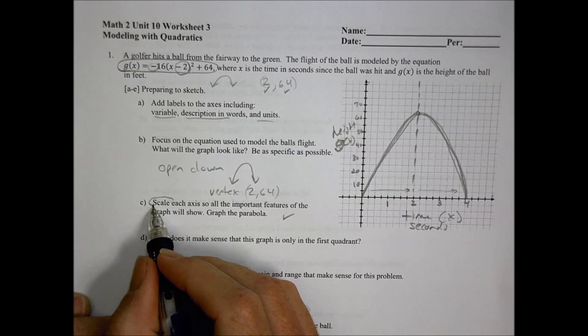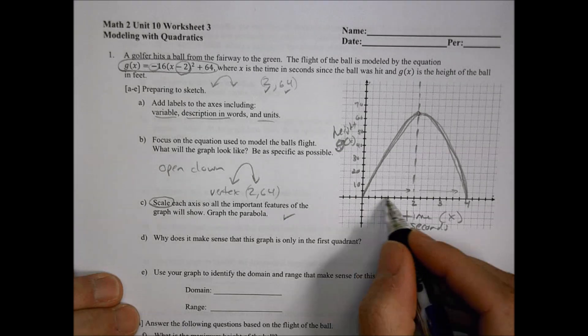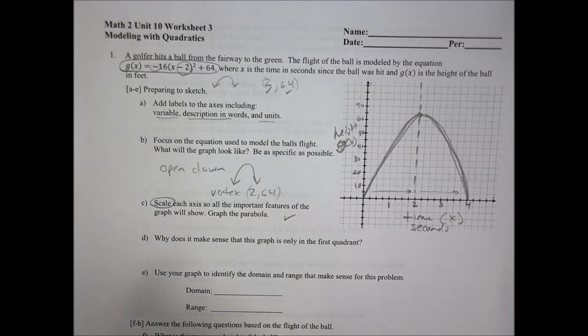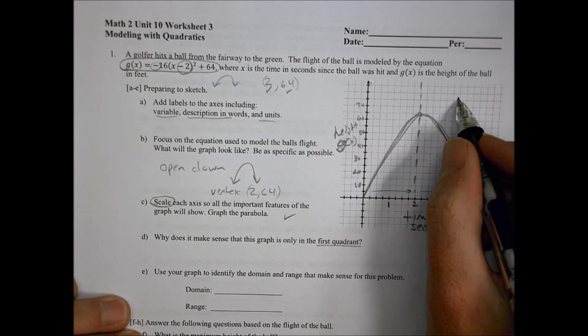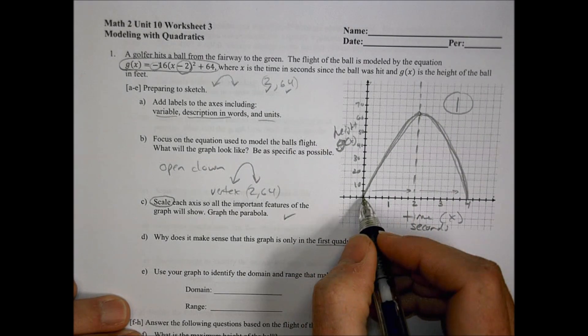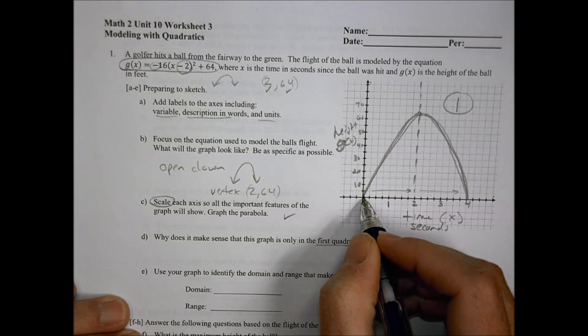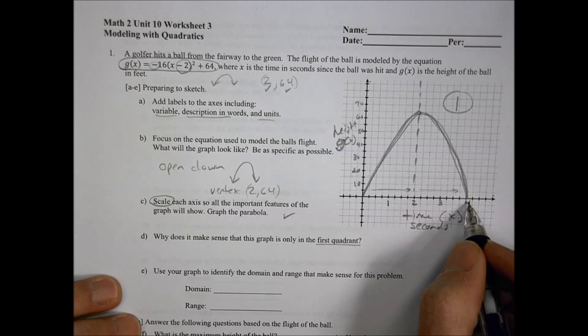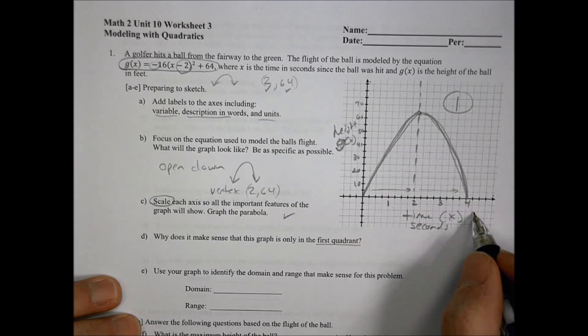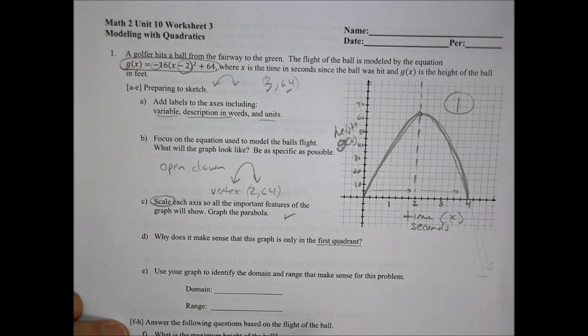Scale each axis so important features of the graph will show. You have to be able to practice that scaling. Why does it make sense that this graph is only in the first quadrant? That's because it has to start at 0 because it's on the ground and not moving. It also has to end here because it's not going to go below the ground level.